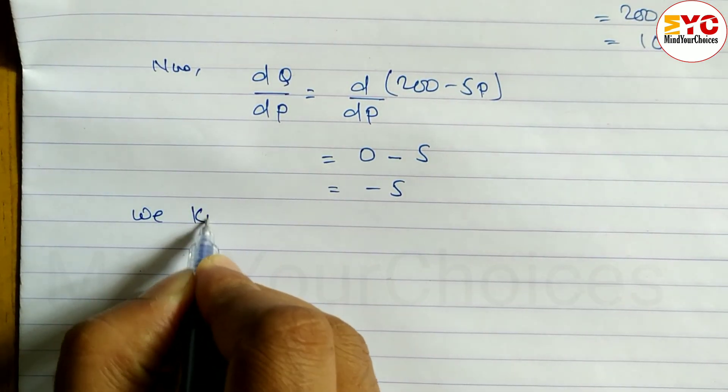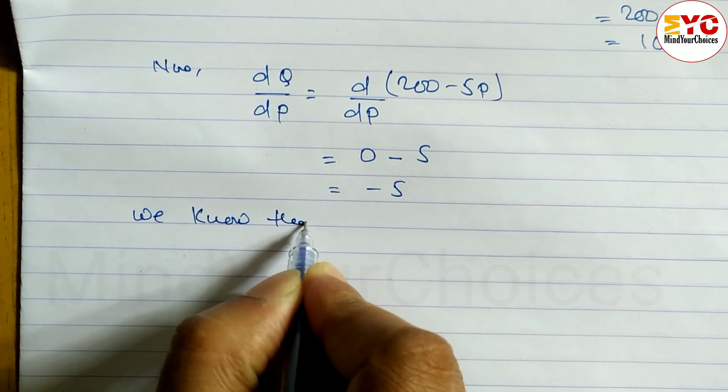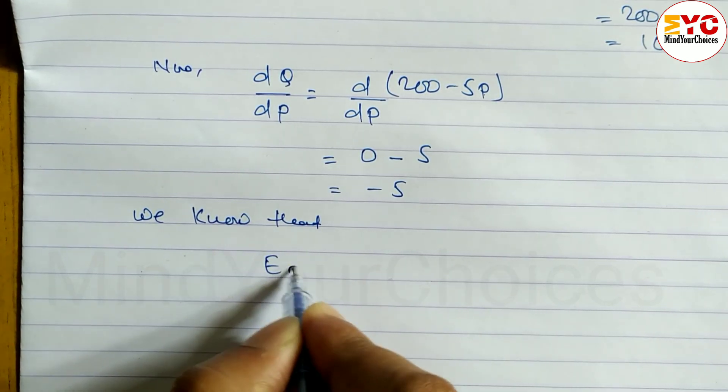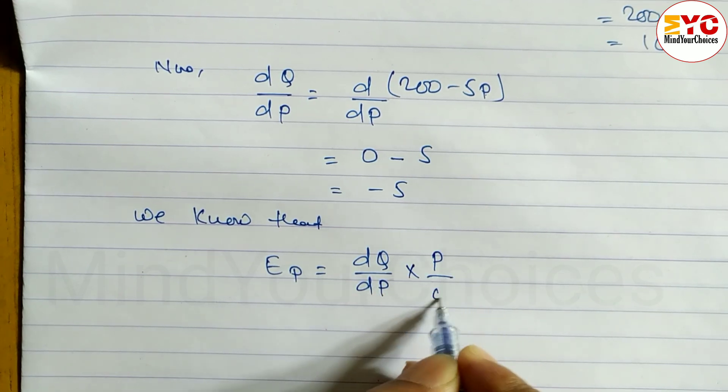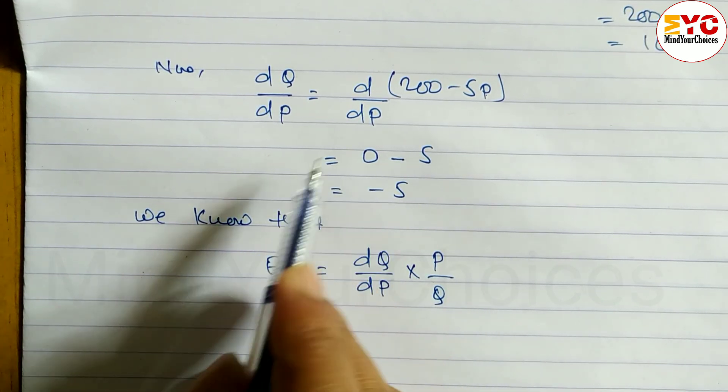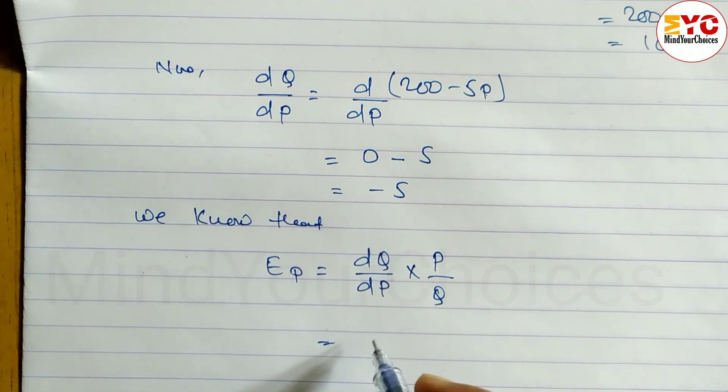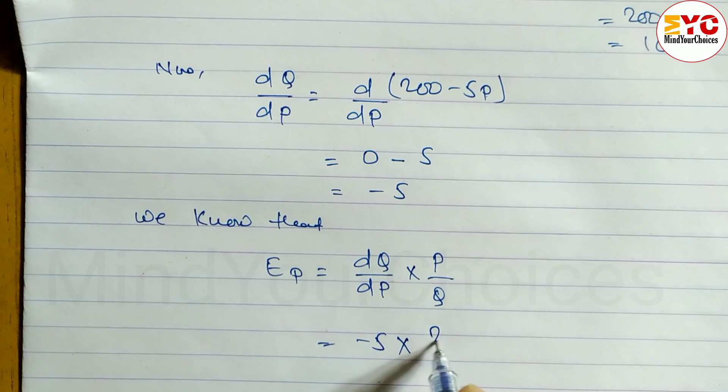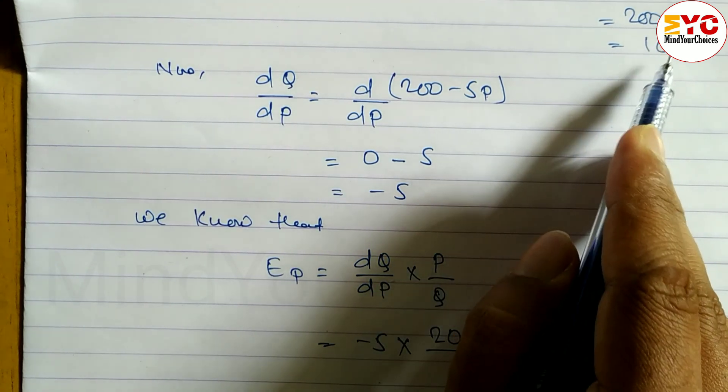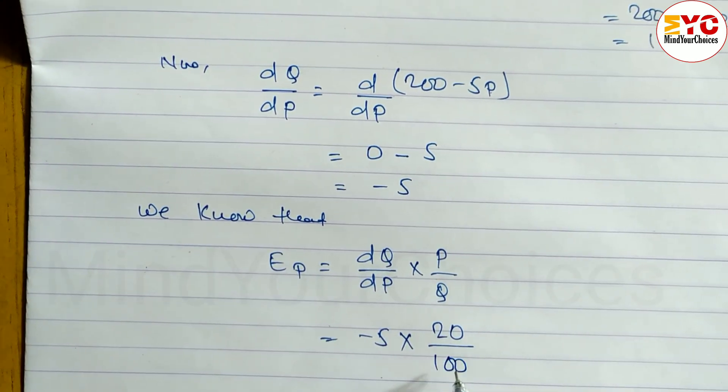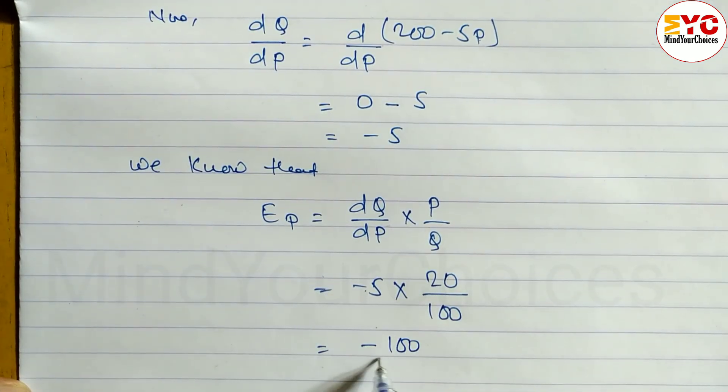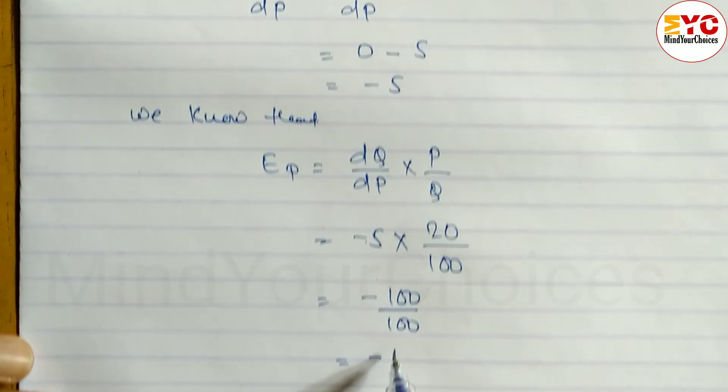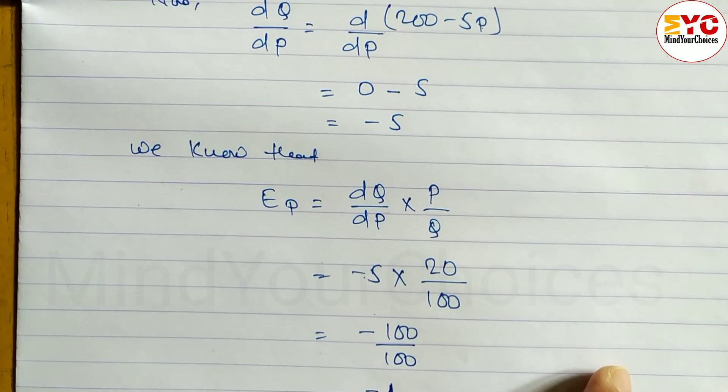Now we use the formula. Ep equals dQ by dP times P by Q. So dQ by dP is minus 5, P is 20, and Q is 100. That's minus 5 times 20 divided by 100, which equals minus 1.